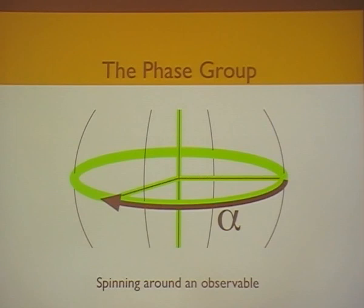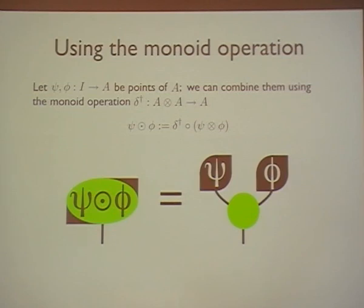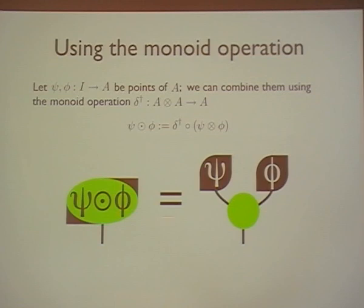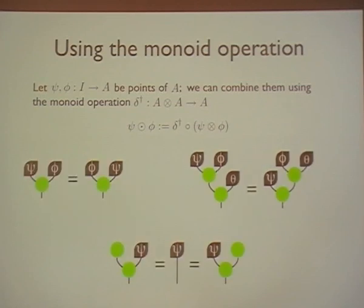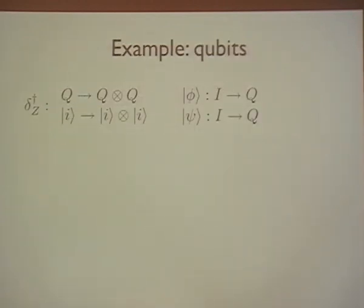Now, what else can we do with these things? The spider theorem says we have all this structure — everything collapses down to just a spider. So we can bring something more interesting into the picture. Recall that we had a monoid, which means we have multiplication. So if ψ and φ are two points in A, I can multiply them together using my monoid operation — call it the circle-dot product. Because of the properties we already showed, we know straight away it's going to be a commutative monoid: associative, and its unit is the unit of the structure.